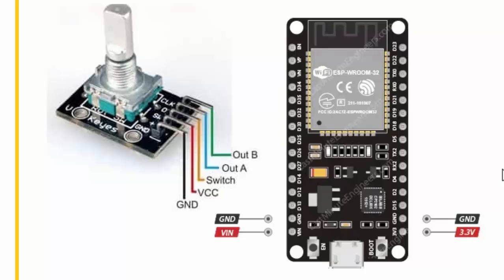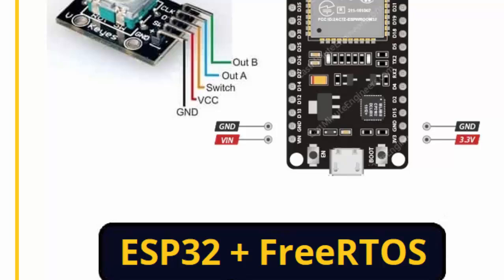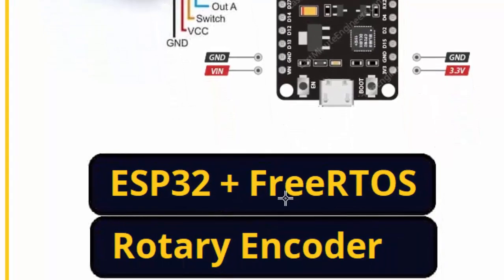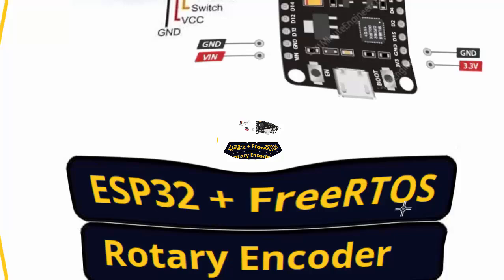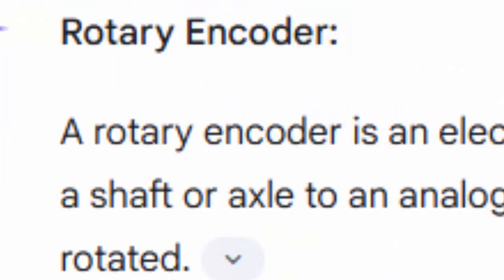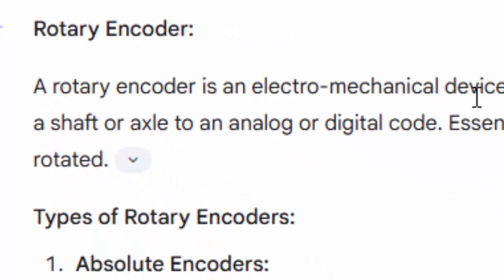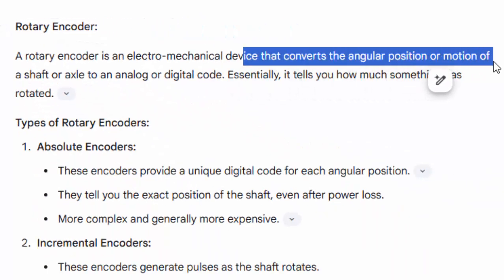Hello everyone, today we are going to talk about what is a rotary encoder, and we are going to interface the rotary encoder with ESP32. We are going to create a simple program, then we will convert it into a FreeRTOS based system. Basically, a rotary encoder is an electromechanical device that converts the angular position or motion